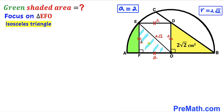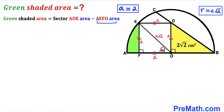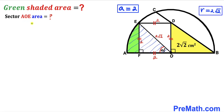Focusing again on right triangle EFO, we can see it's an isosceles triangle since both legs are equal (each side = 2). Therefore the angle at O is 45 degrees and the angle at E is 45 degrees as well. Now, the green shaded region area equals the sector AOE area minus the area of triangle EFO. So our task is to calculate both of these.